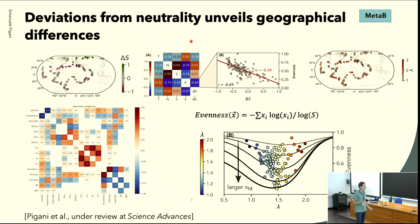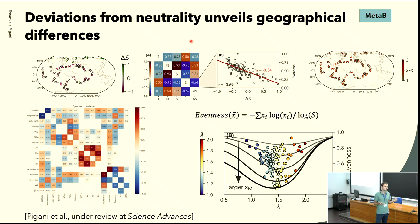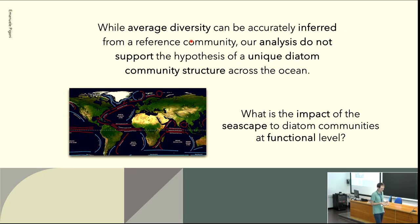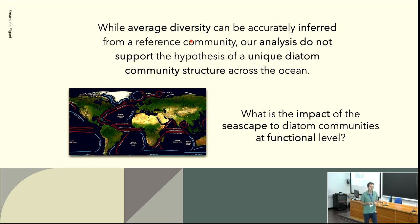There is something that we should understand. The average diversity can be understood just by a sampling hypothesis, and then we should investigate the deviations. This is more or less the take-home message for this first part.